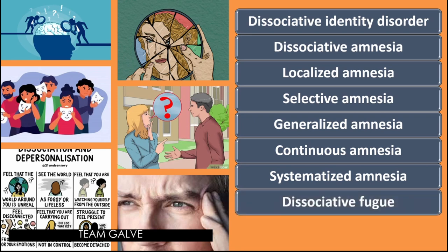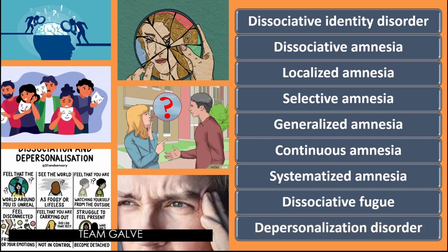The last subcategory is dissociative fugue — a sudden, unexpected travel away from home or customary work locale with assumption of a new identity and inability to recall one's previous identity. The last major type is depersonalization disorder, characterized by a temporary change in the quality of self-awareness, which often takes the form of feelings of unreality, changes in body image, feelings of detachment from the environment, or a sense of observing oneself from outside the body.